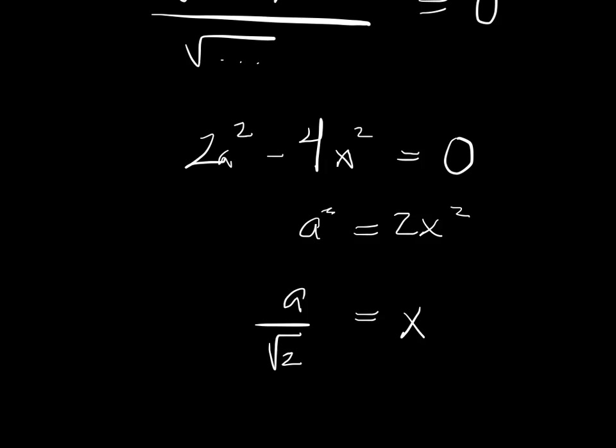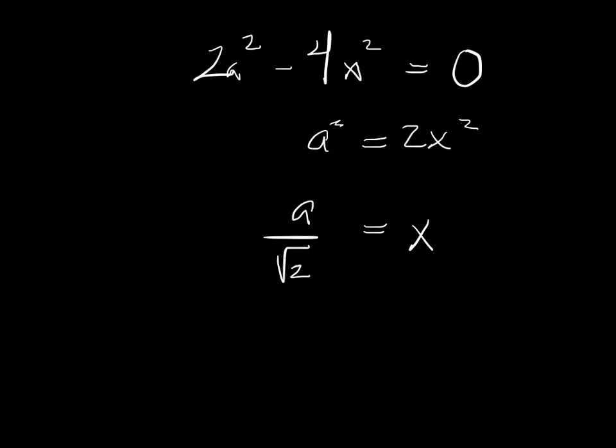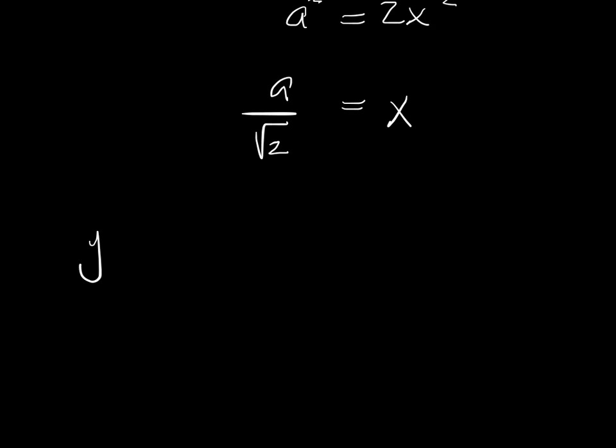So, we had our other equation which told us y. Remember y was root a squared minus x squared. Well in this case, a squared minus all that, you can pause the video and simplify it if you like, but it's going to work out to also be a over root 2.